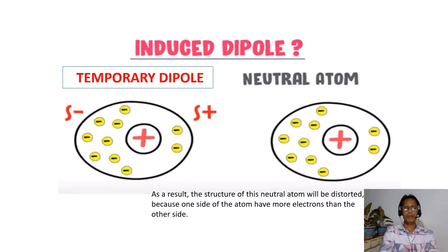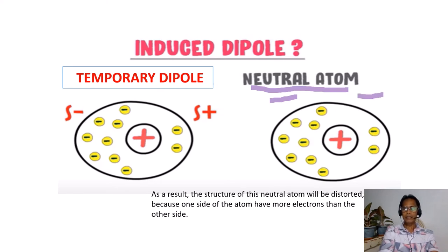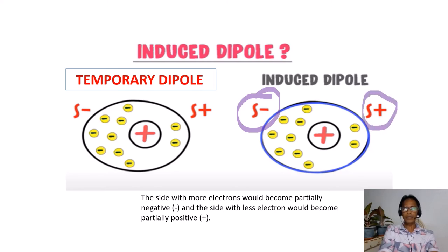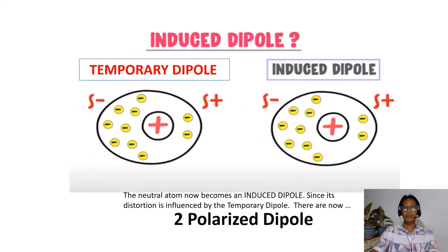As a result, the structure of the neutral atom will deform or will be distorted, because one side of the atom now has more electrons than the other side. The side with more electrons becomes partially negative and the side with less electrons becomes partially positive. The neutral atom now becomes an induced dipole.